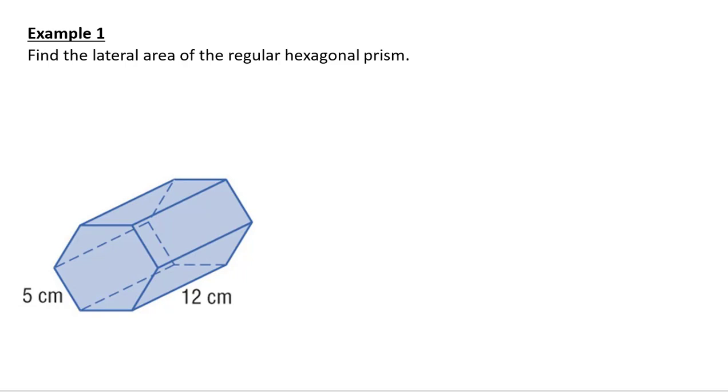For the lateral area of the hexagonal prism, lateral area equals perimeter of the base—one, two, three, four, five, six sides, they're each five centimeters long—and then our height is 12. I knew that they were each five, I knew that all these were congruent because the question told me it's a regular hexagonal prism. So multiplying all those together, we get 360 square centimeters.